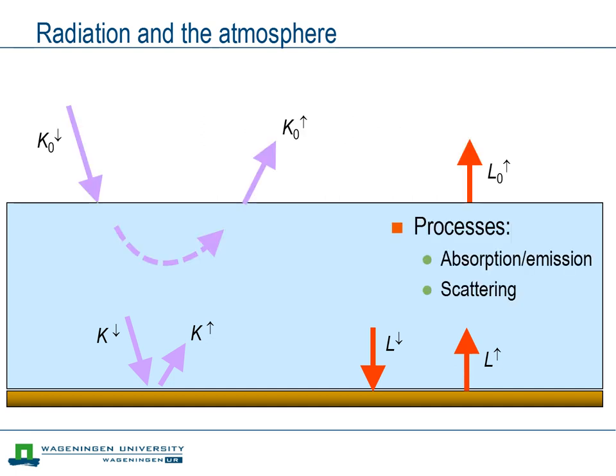To understand the downwelling terms we need to understand how the atmosphere influences radiation. We distinguish two processes here: absorption and emission on the one hand, and scattering on the other hand. Note that at the top of the atmosphere no longwave radiation arrives. Outer space is sufficiently cold and void of emitting sources that hardly any longwave radiation arrives at the top of the atmosphere from outer space.